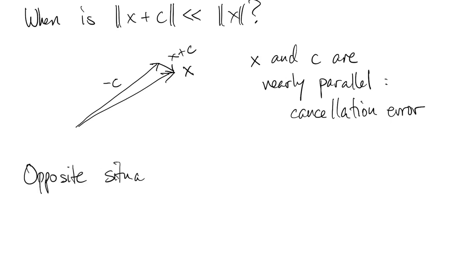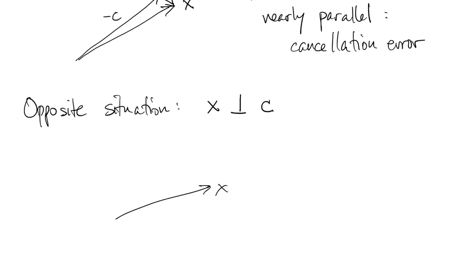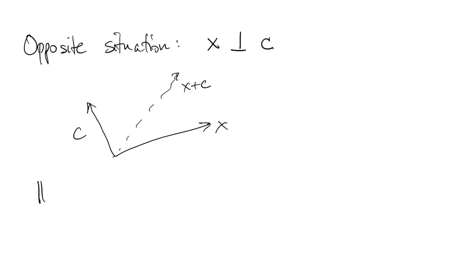What's the opposite of that situation? The opposite of parallel, in a sense, is perpendicular. So if the two vectors are perpendicular, then their sum is along the diagonal of a rectangle, and it actually gets larger, it can never get smaller.